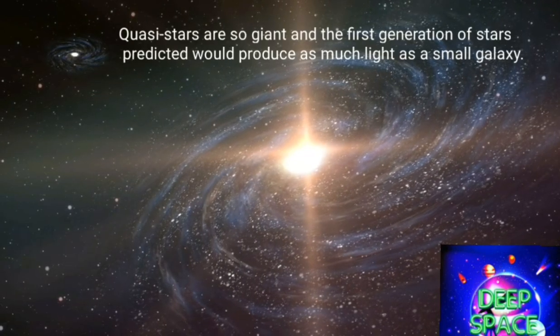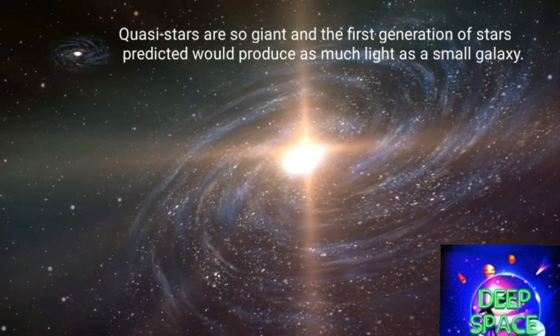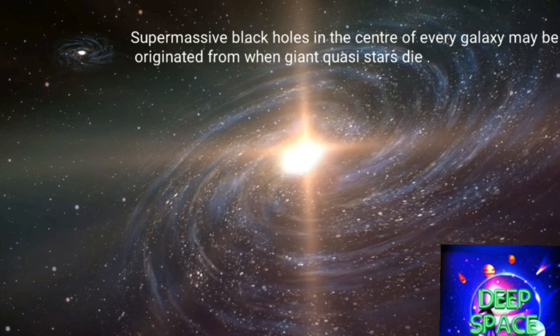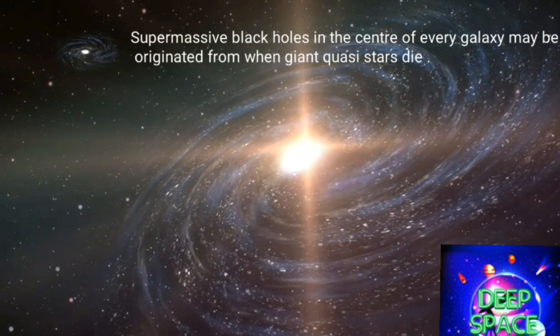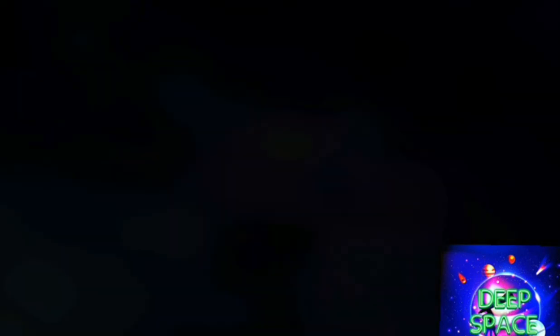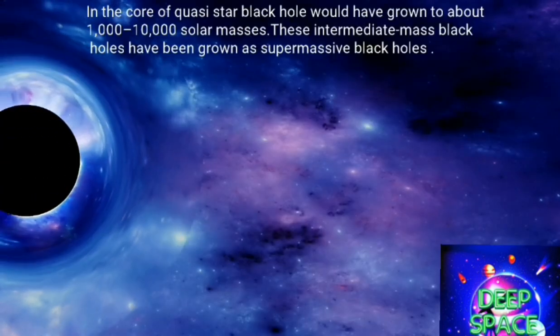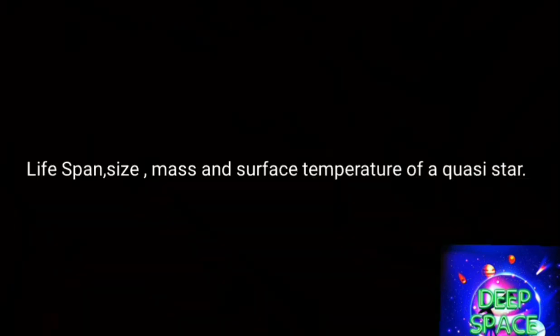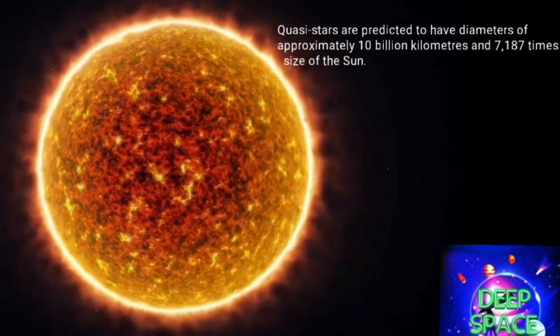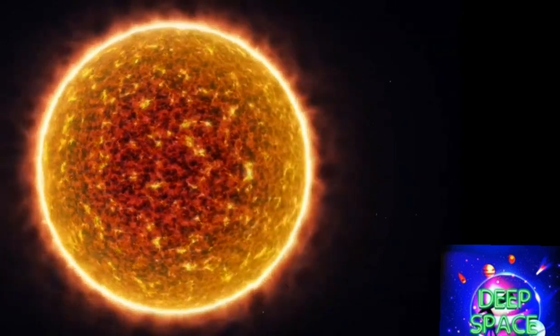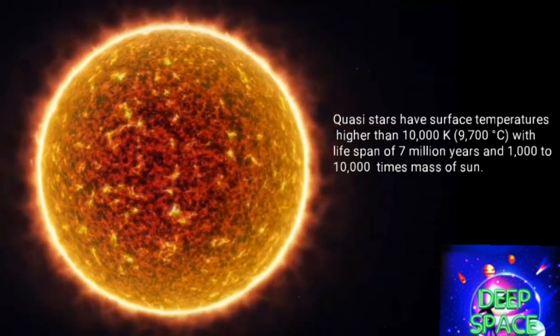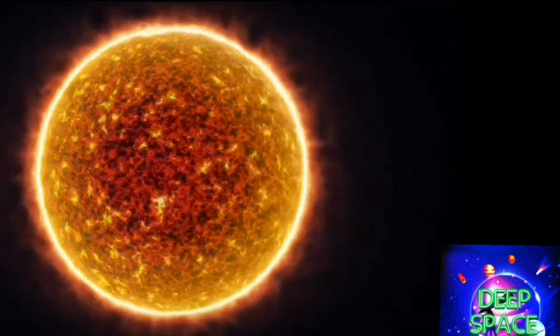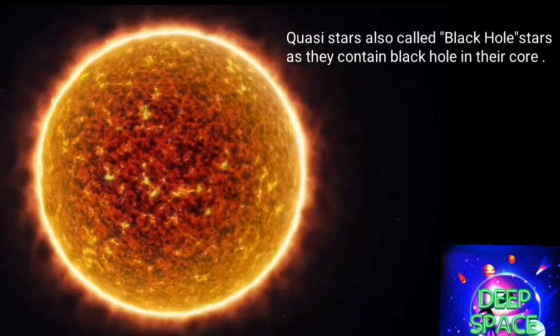Quasistars are so giant that the first generation of stars predicted would produce as much light as a small galaxy. Supermassive black holes at the center of every galaxy may have originated from one giant quasistar. As quasistars die, the core black hole would have grown to 1,000 to 10,000 solar masses, with this intermediate black hole later growing into a supermassive black hole. Quasistars are predicted to have a diameter of 10 billion kilometers, be 71 to 87 times the size of the Sun, with a surface temperature higher than 10,000 Kelvin and a lifespan of 7 million years. Quasistars are also called black hole stars due to containing a black hole in their core.